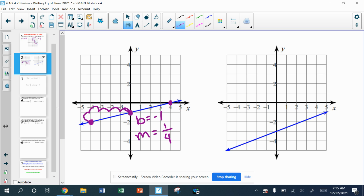And again, I could check it again. Up 1 over 1, 2, 3, 4. So the equation is going to be y equals 1 fourth x minus 1.